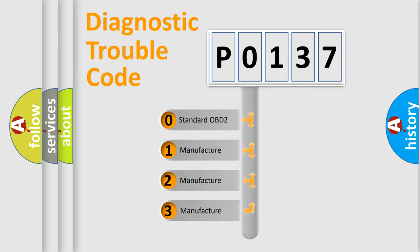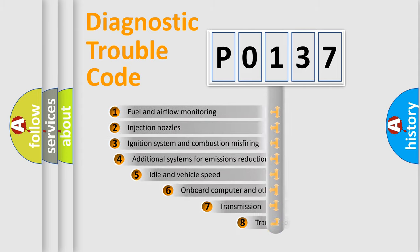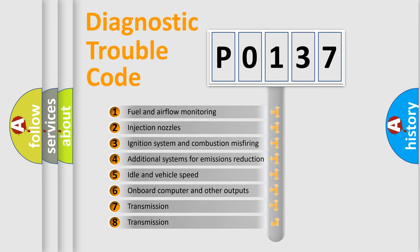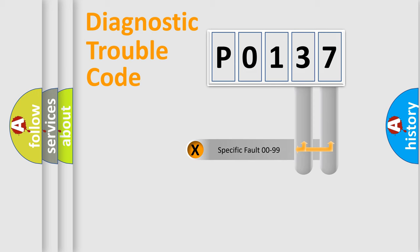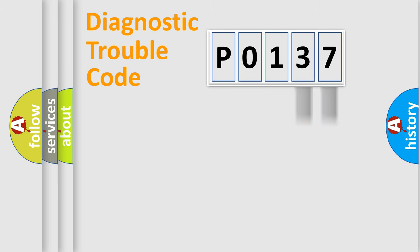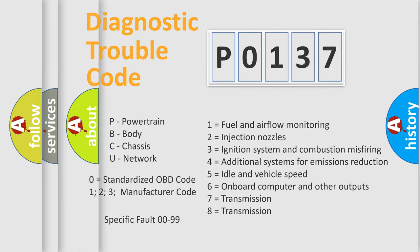If the second character is expressed as zero, it is a standardized error. In the case of numbers 1, 2, or 3, it is a more specific expression of a car-specific error. The third character specifies a subset of errors. This distribution is valid only for the standardized DTC code, and only the last two characters define the specific fault of the group. Such a division is valid only if the second character code is expressed by the number zero.